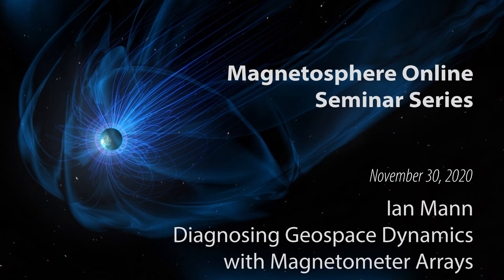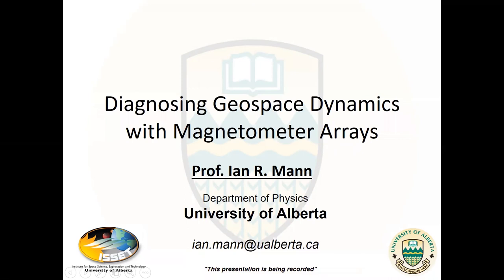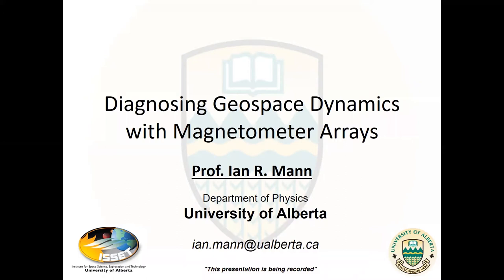Today we are delighted to have Professor Ian Mann as our speaker. Ian is a professor in the Department of Physics at the University of Alberta. He is a magnetospheric physics researcher with interest in radiation belt and substorm dynamics, serving as a co-investigator on the NASA Van Allen Probes and THEMIS missions. He is especially interested in utilization of data from networks of ground-based magnetometers.